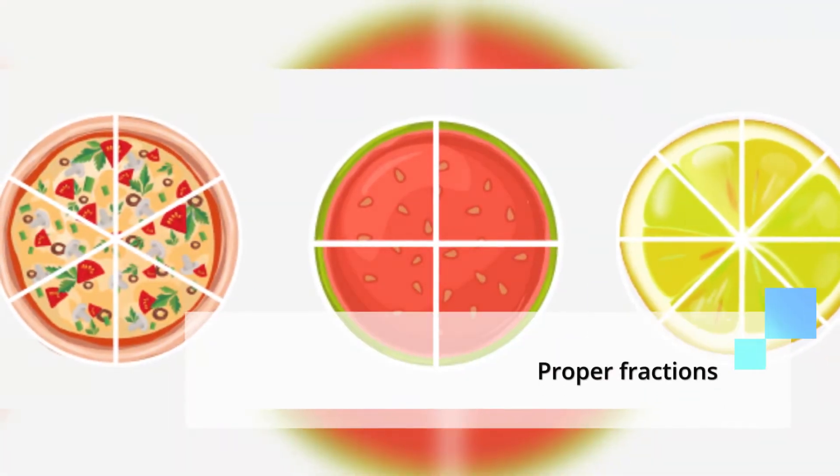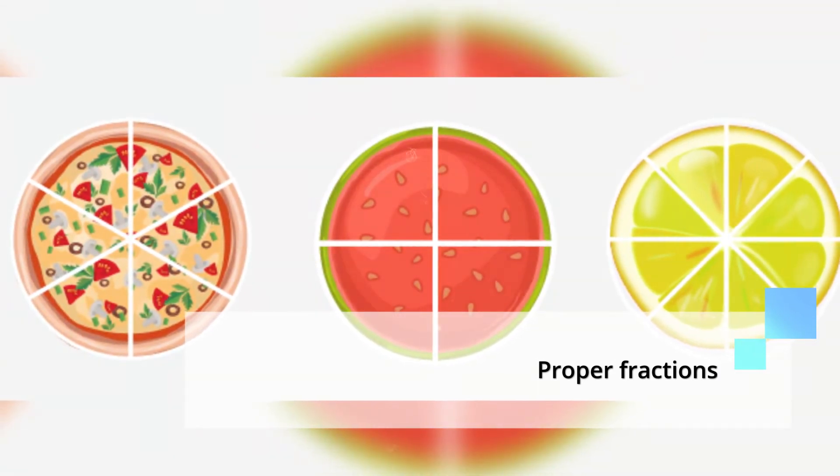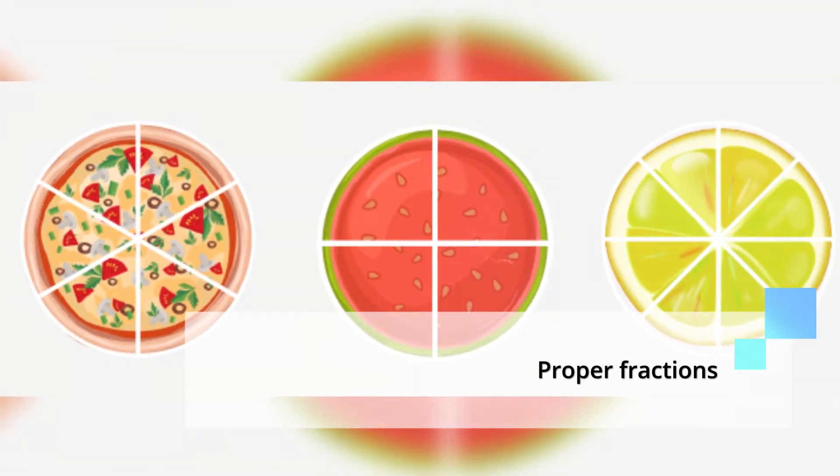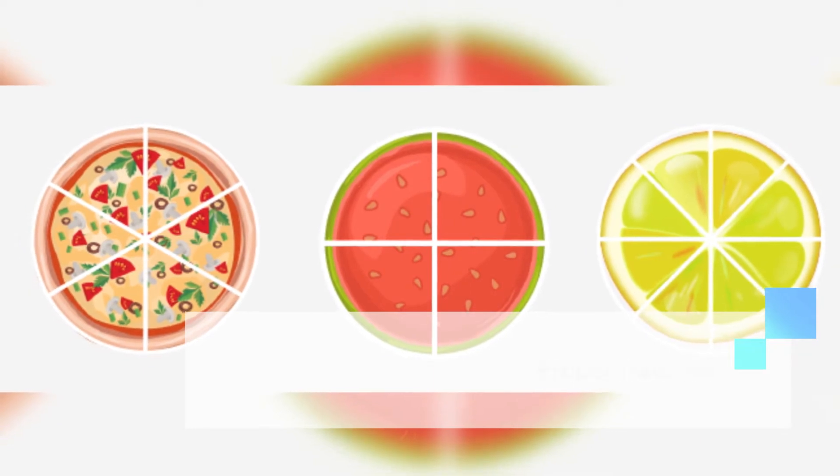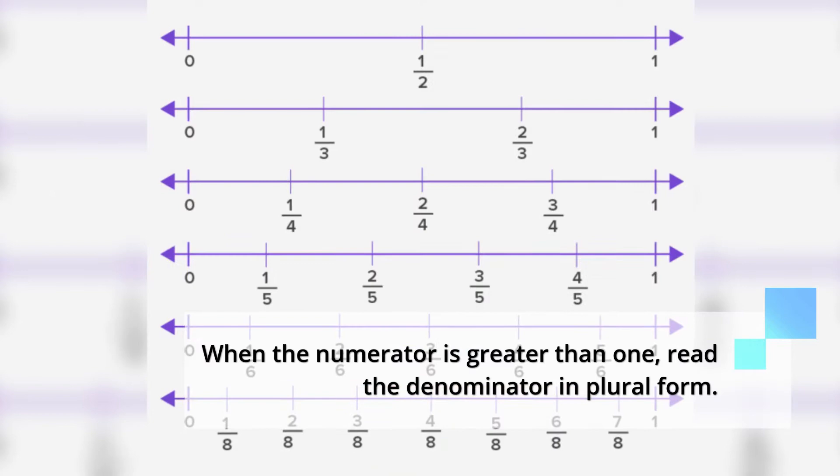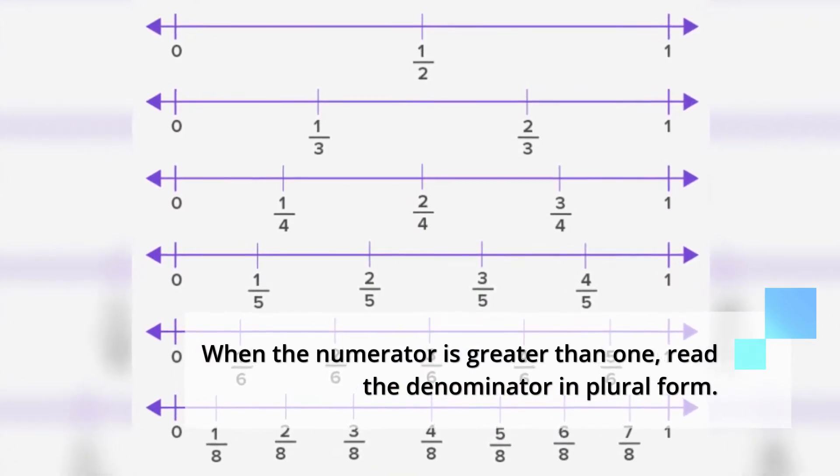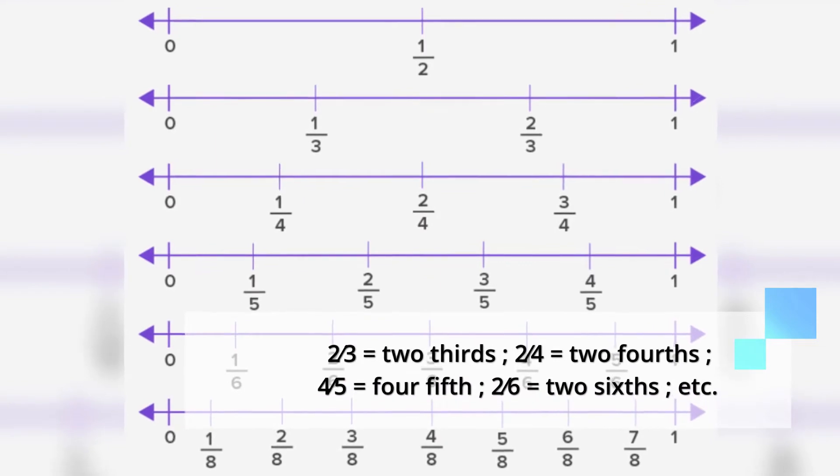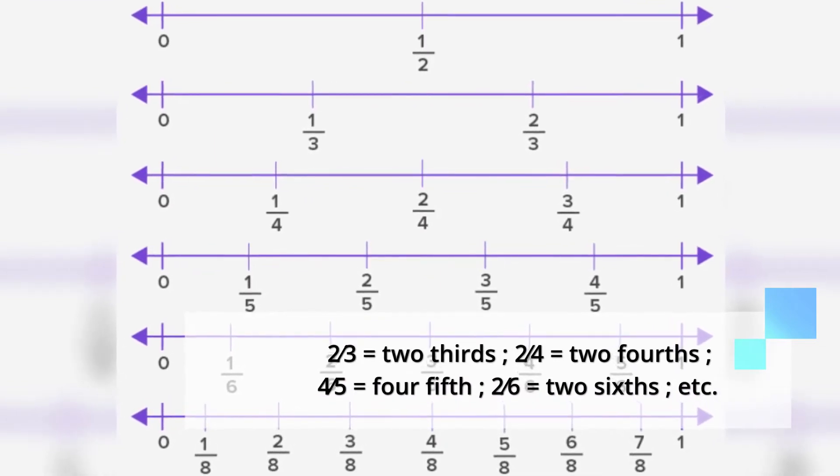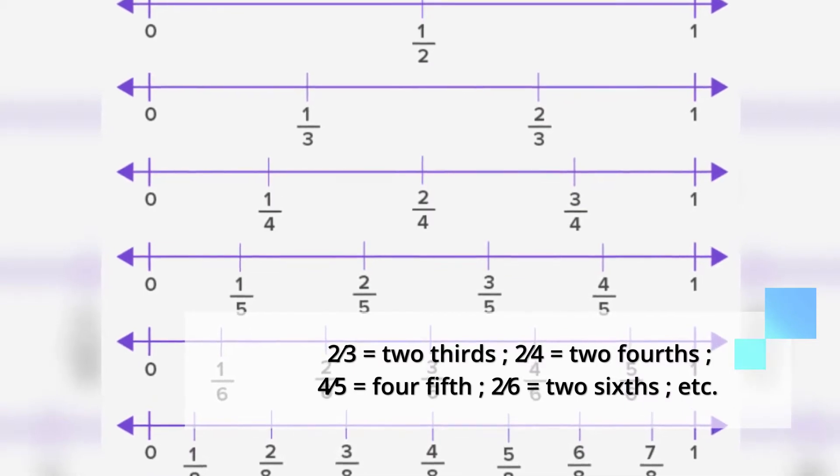The second type of fraction belongs to the proper fractions. When in a fraction the numerator is greater than 1, then read the denominator in plural form. For example, 2 thirds, 2 fourths, 3 fourths, 4 fifths, 2 sixths, and so on.